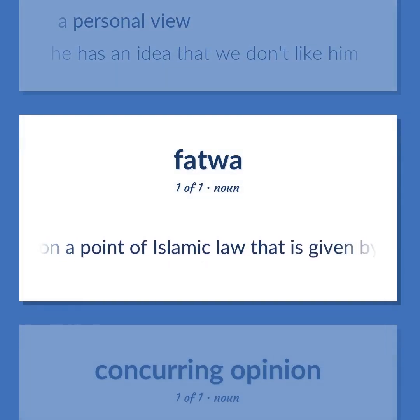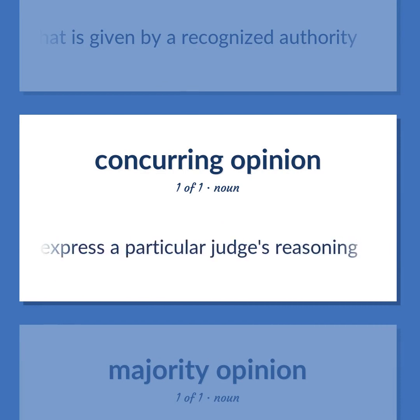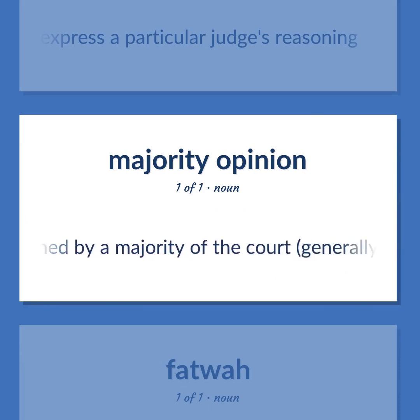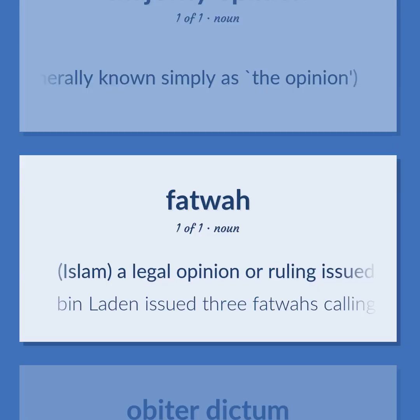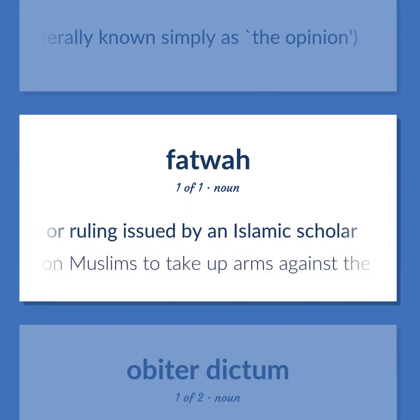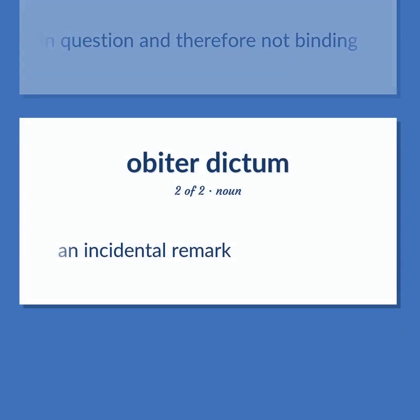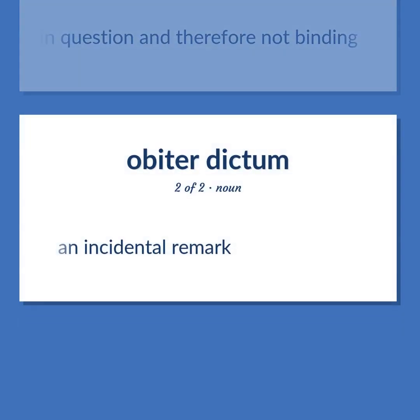'Fatwa': A ruling on a point of Islamic law given by a recognized authority. In Islam, a legal opinion or ruling issued by an Islamic scholar. Example: 'Bin Laden issued three fatwas calling upon Muslims to take up arms against the United States.' 'Concurring opinion': An opinion that agrees with the court's disposition of the case but is written to express a particular judge's reasoning. 'Majority opinion': The opinion joined by a majority of the court, generally known simply as 'the opinion.' 'Obiter dictum': An opinion voiced by a judge on a point of law not directly bearing on the case in question and therefore not binding — an incidental remark.